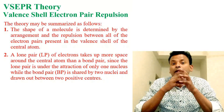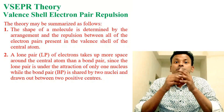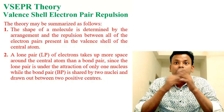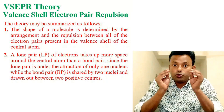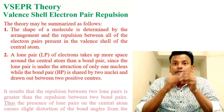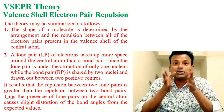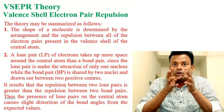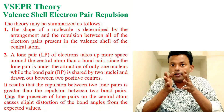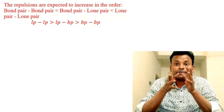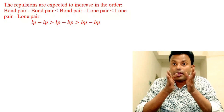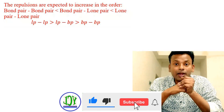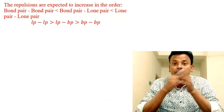A lone pair takes up more space since it is under the attraction of only one nucleus, while a bond pair is shared by two nuclei and drawn out between two opposite centers. It results that the repulsion between two lone pairs is greater than the repulsion between two bond pairs. The presence of a lone pair on the central atom causes a slight distortion of the bond angle from the expected value. The repulsions increase in the order: bond pair–bond pair < lone pair–bond pair < lone pair–lone pair.